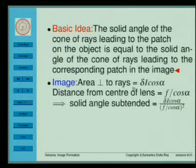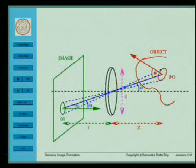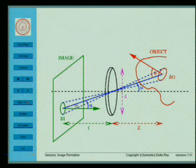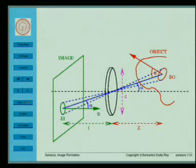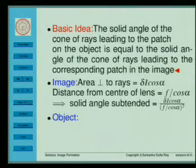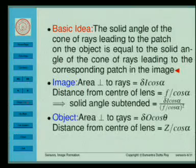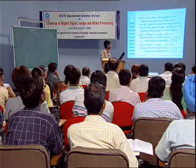In an image we find out the effective area perpendicular to the rays. The distance from the center of the lens is f divided by cosine alpha. We can compute the solid angle subtended here, and we have a similar relationship for the object, giving two expressions for the solid angle which we can equate.